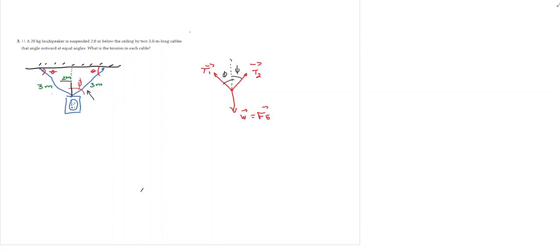The cables angle outward at equal angles. So what is the tension in each cable? We know that the angle of the cables with respect to the ceiling is the same, and we are going to call that angle, angle zeta. Also, the angle of each cable with respect to the vertical — that is the imaginary line that goes from the loudspeaker to the ceiling and perpendicular to the ceiling — is the angle phi, and it is the same for both cables.